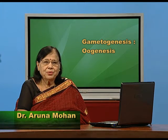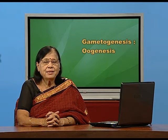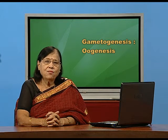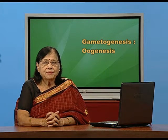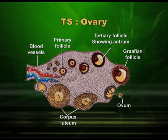In today's session we are discussing gametogenesis in female, that is oogenesis. We have already discussed what gametogenesis is, its significance, why it should take place and what is the result. In females, when a gamete is formed which we call ova, then it is oogenesis. To describe oogenesis properly, I will show you this diagram of the ovary, where you can see the follicles, and now I will concentrate on the Graafian follicle.